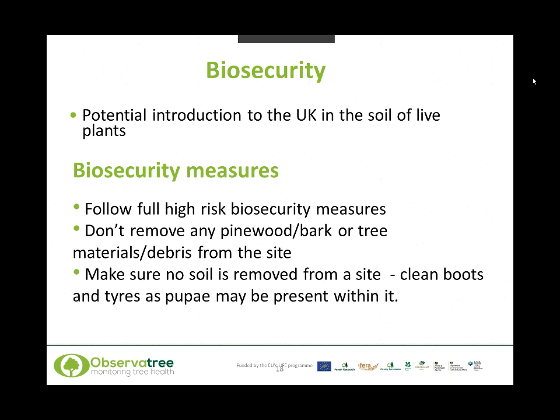Regarding biosecurity, the main pathway for entry to the UK for the pine processionary moth would be in the soil of live plants, because they pupate in the soil. Pupae can be hidden in the soil around the roots of potted trees. To minimize the risk of spreading, we need to follow high biosecurity measures at all times, taking particular care not to remove any tree debris or material from the site, as egg masses or caterpillars may be present — especially in the early larval stages when they are small and difficult to see. We must also ensure no soil is removed from the site as it might harbour pupae.